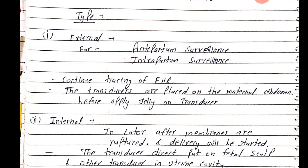The fetal heart rate transducer is placed on the abdomen. Before placing the transducer, we will listen to the fetal heart rate by fetoscope or Doppler. After locating the fetal heart rate, we apply the transducer gel and place the transducer on that site.